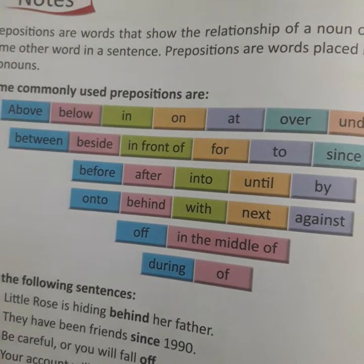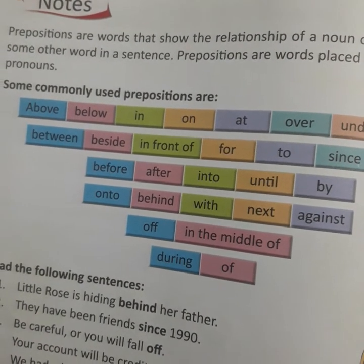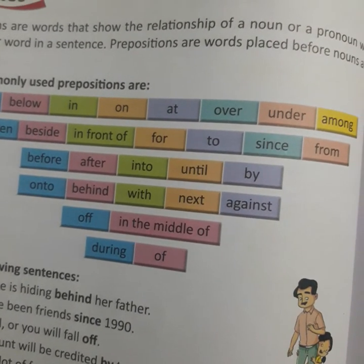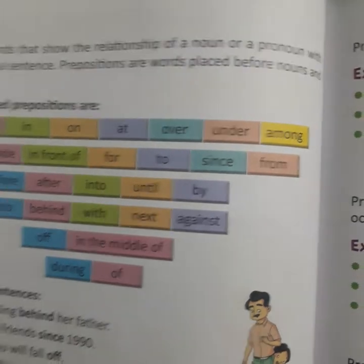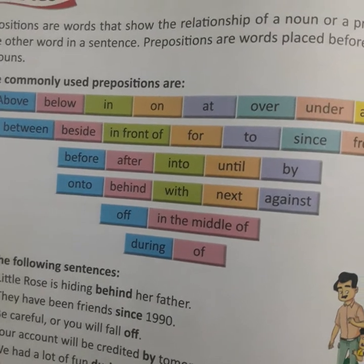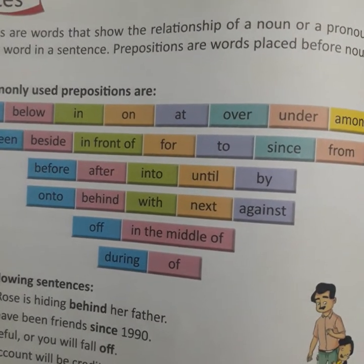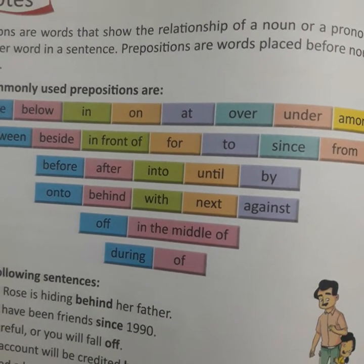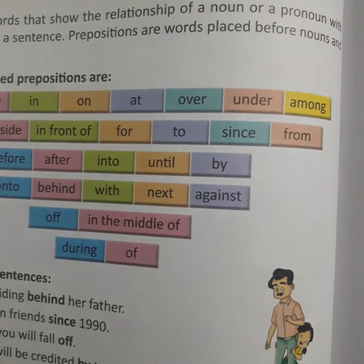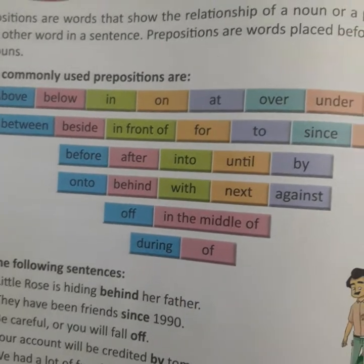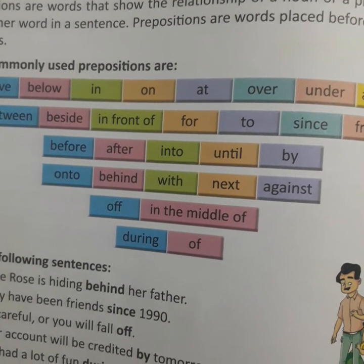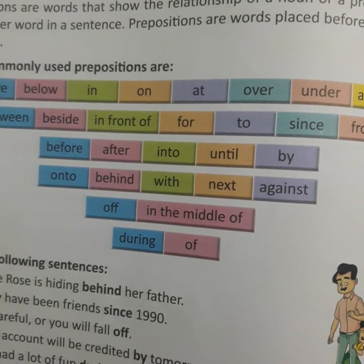So, first of all, let us understand what is preposition. Preposition होती क्या है? वो नाउन और प्रोनाउन से पहले यूज की जाती है, मतलब उनके आगे लगाई जाती है.